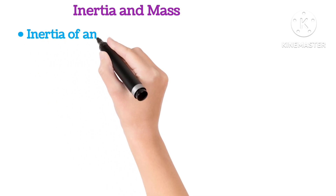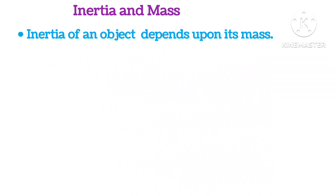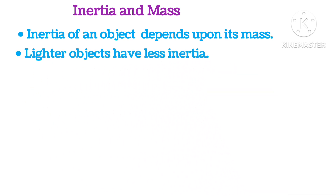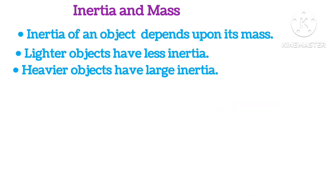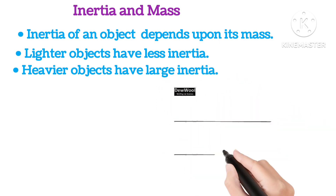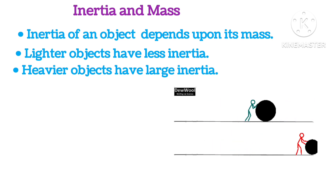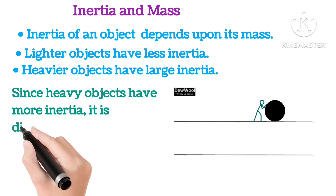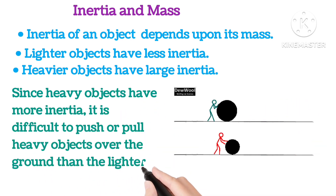Inertia and Mass. Inertia of an object depends upon its mass. Lighter objects have less inertia; heavier objects have large inertia. Since heavy objects have more inertia, it is difficult to push or pull heavy objects over the ground compared to lighter ones.